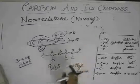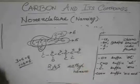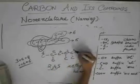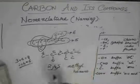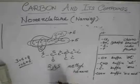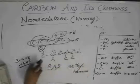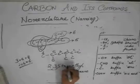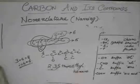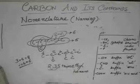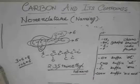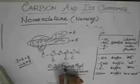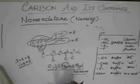Then, the name would be modified to two, four, five. Now, let us see if counting from this side, in this case, leads to a lower sum. If we count from this side, it's two, three, five. And here it was two, four, five. So, two, three, five is obviously lower than two, four, five. So, now count from this side. And the formula becomes 2,3,5-trimethyl hexane.